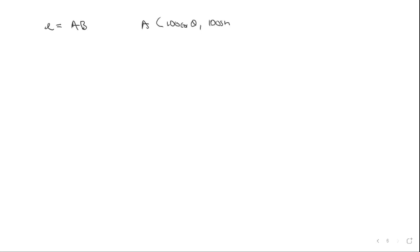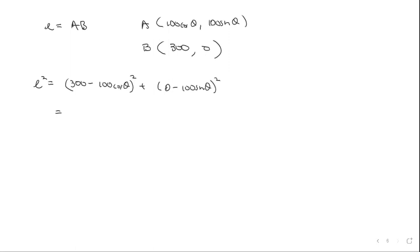Point A has coordinates (100cosθ, 100sinθ), and since the center of the circle is the origin, point B is at (300, 0). So l² equals (300 − 100cosθ)² plus (0 − 100sinθ)², which expands to 90000 minus 60000cosθ plus 10000cos²θ plus 10000sin²θ. Since sin²θ + cos²θ = 1, this gives 10000.